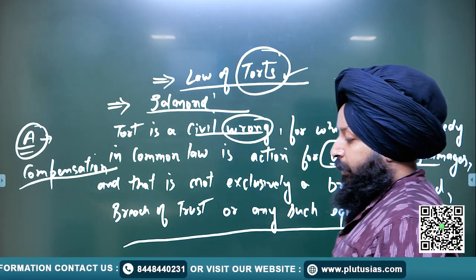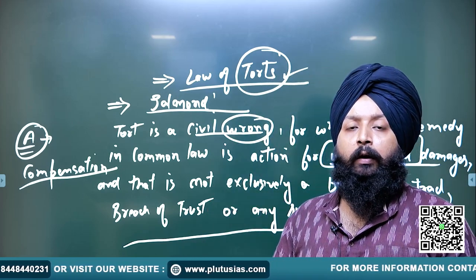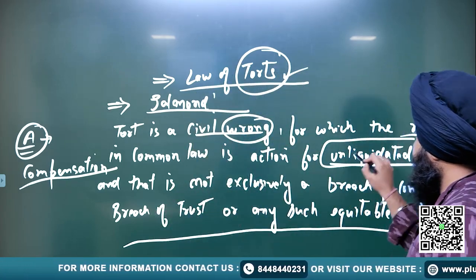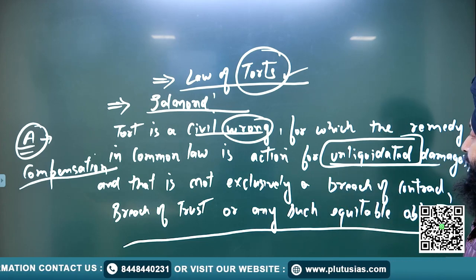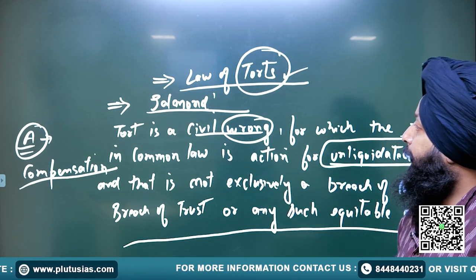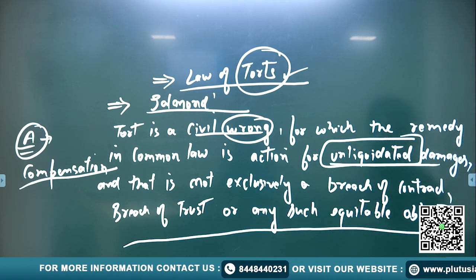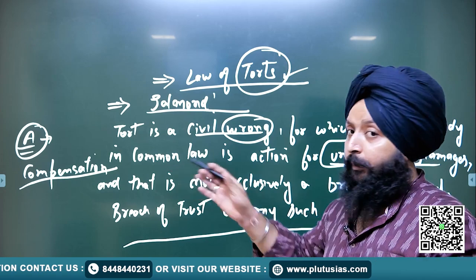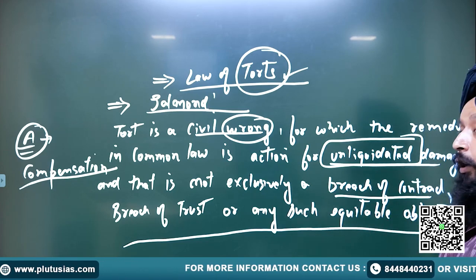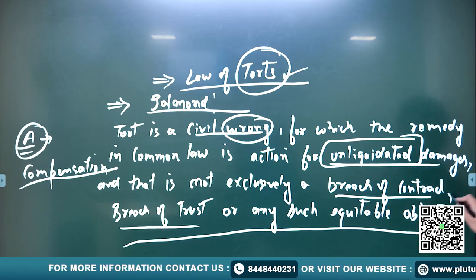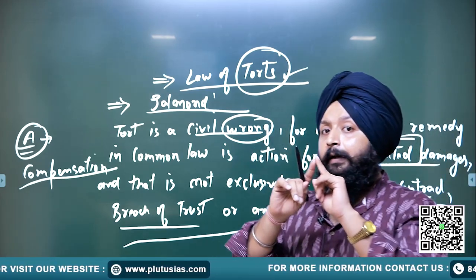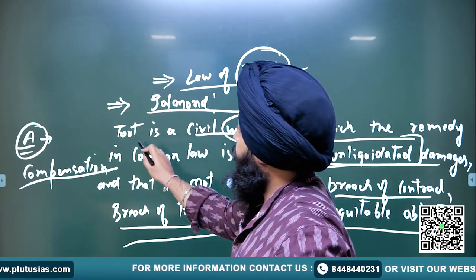The damages in tort should be unliquidated. Unliquidated damages means they are not fixed by the contesting parties — in other words, the unliquidated damages are decided by the court. This factor differentiates tort from a breach of contract. So first, a tort is a civil wrong, and the remedy lies in action for unliquidated damages. Salmond has specifically stated that tort is not a breach of contract, breach of trust, or any equitable obligation.